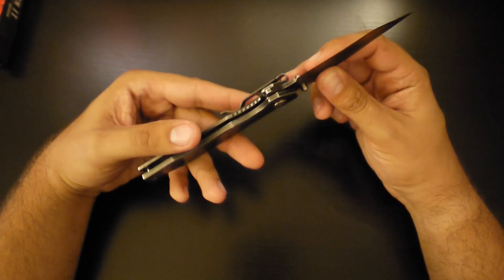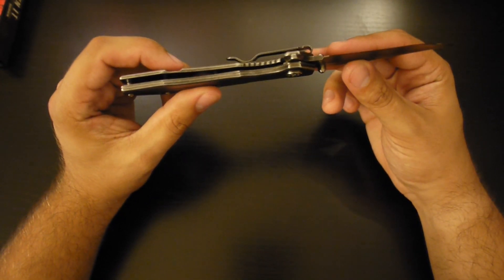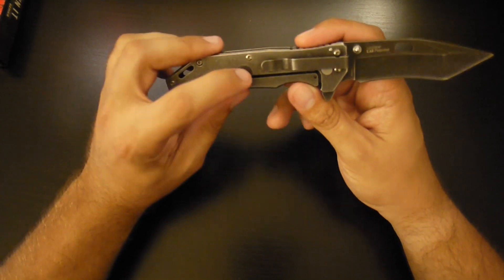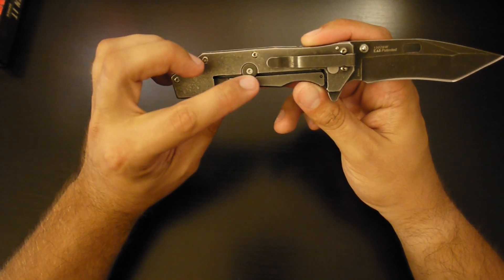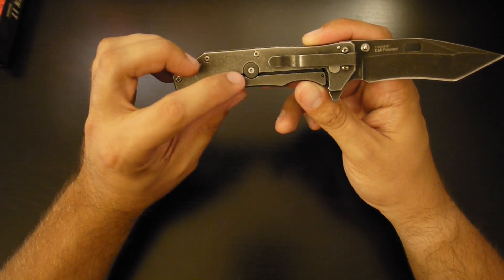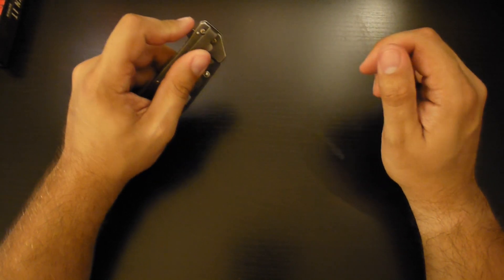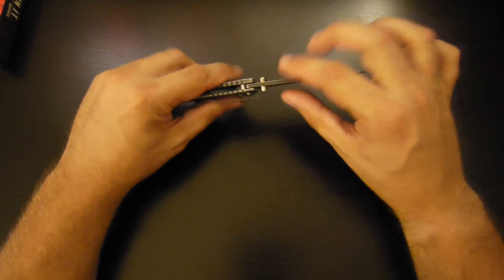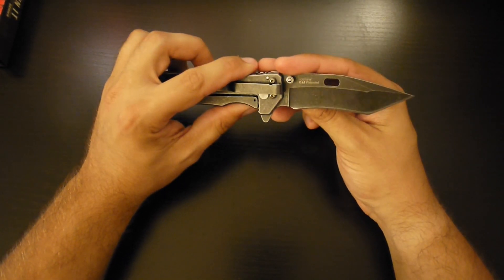And it is a frame lock knife. And the great part about this is it has this bar here like some of the other Kershaw knives that prevent the frame from stretching out too much so your lock will work and it won't break. The lockup, there's no side to side or up to down. This is a very good lockup for this blade.